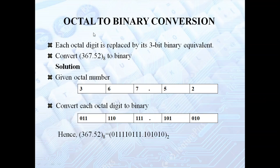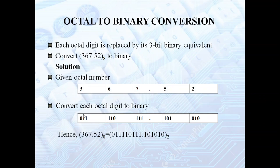Let us see how to convert octal to binary. Each octal digit is replaced by its 3-bit binary equivalent. Since 2 power 3 is 8, we use 3 bits for binary representation. The positional weights are 2 power 0, 2 power 1, 2 power 2. For example, 2 power 1 is 2 plus 2 power 0 is 1, so 2 plus 1 is 3. Likewise, convert all octal digits to their 3-bit binary equivalents.